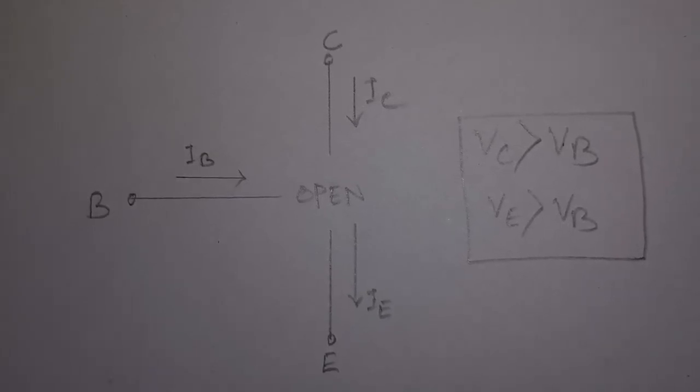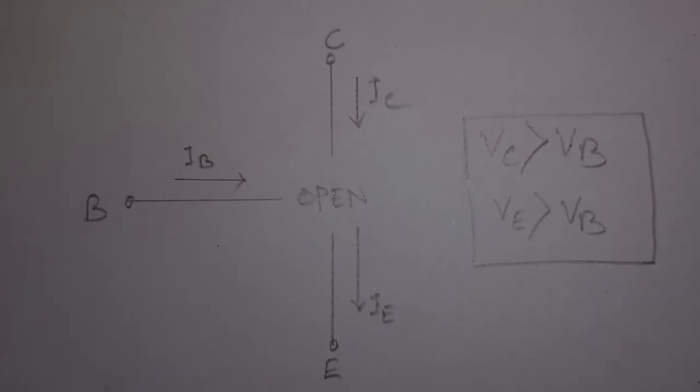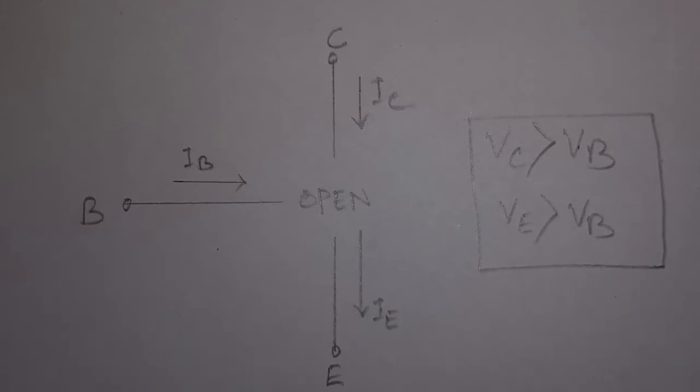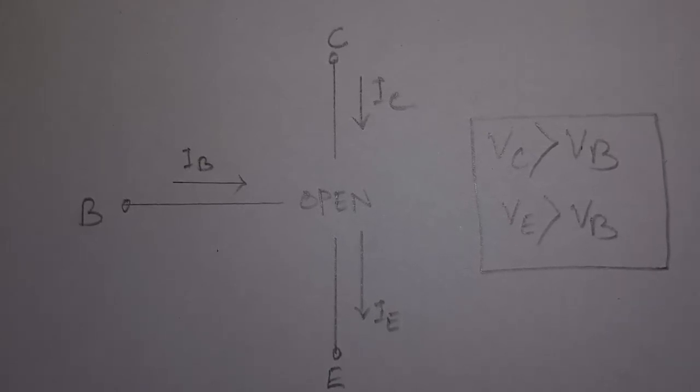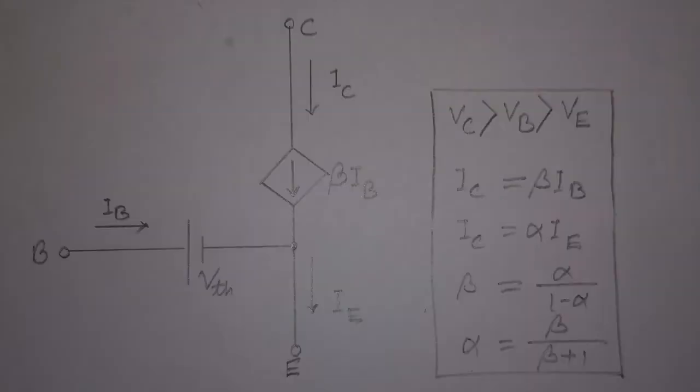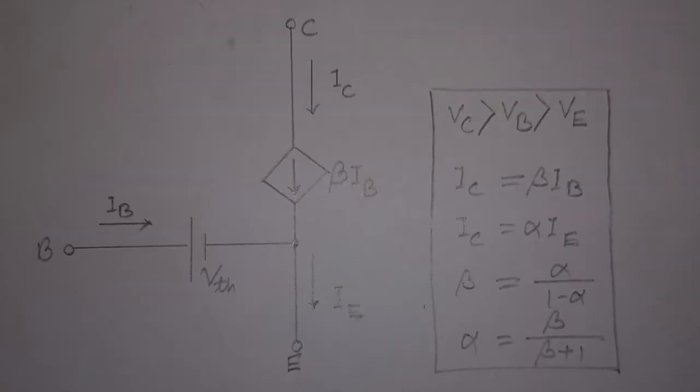Thus, the base voltage must be less than the collector voltage, but greater than the emitter voltage. That also means the collector voltage must be greater than the emitter voltage. In the active mode of operation, a transistor can be used as an amplifier.